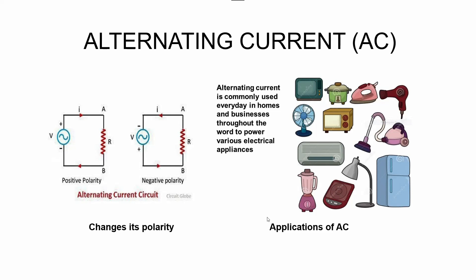In alternating current, the electric charge flow changes its direction periodically. AC, that means alternating current, is the most commonly used and most preferred electric power for household equipment, offices, and buildings. Alternating current can be identified in a waveform called a sine wave — it can also be referred to as a curved line. The measurement is completely read in hertz, generally notated as Hz. AC is used in homes and buildings because generating and transporting AC across long distances is relatively easy.